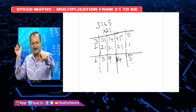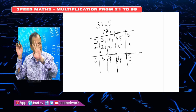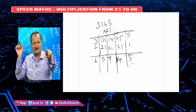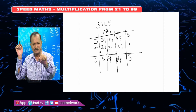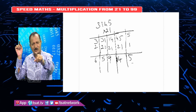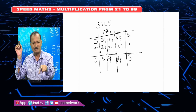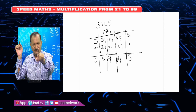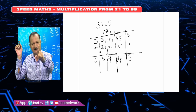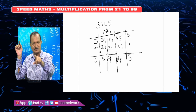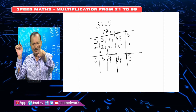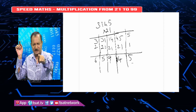Next, 45 into 21 cross multiplication: 1 into 4 is 4, 5 into 2 is 10, 10 plus 4 is 14. Next, the last two digits are 5 into 1.